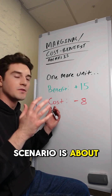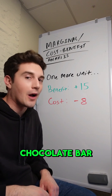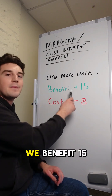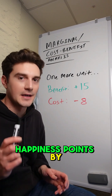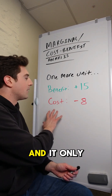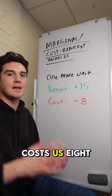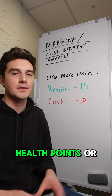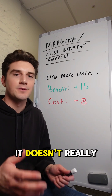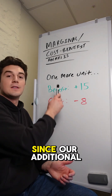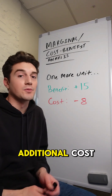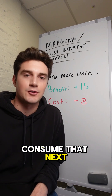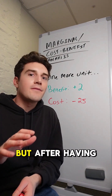Let's say this scenario is about consuming an extra chocolate bar. We benefit 15 happiness points by consuming it, and it only costs us eight health points. Since our additional benefits outweigh our additional costs, we're going to consume that next chocolate bar.